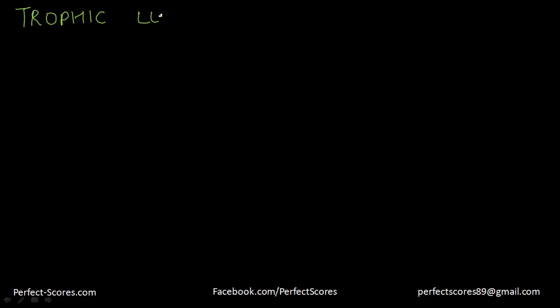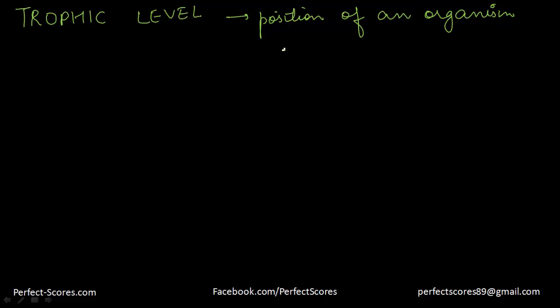Welcome to another video on biology. The topic we are doing is ecology. This is PreThinder Core for Perfect Scores. The concept we will discuss is trophic levels. Trophic level refers to the position an individual occupies in the food chain. Producers always occupy the first trophic level, while saprotrophs would generally occupy the ultimate or last trophic level of a given food chain.